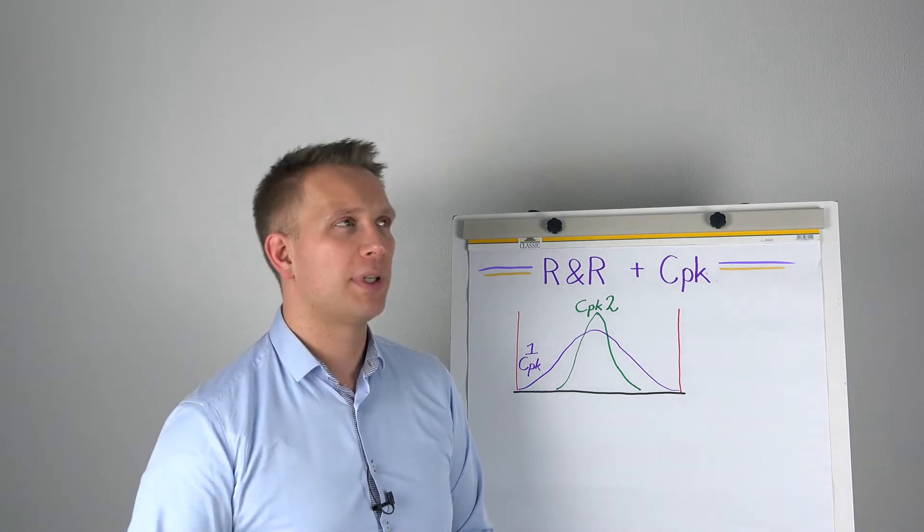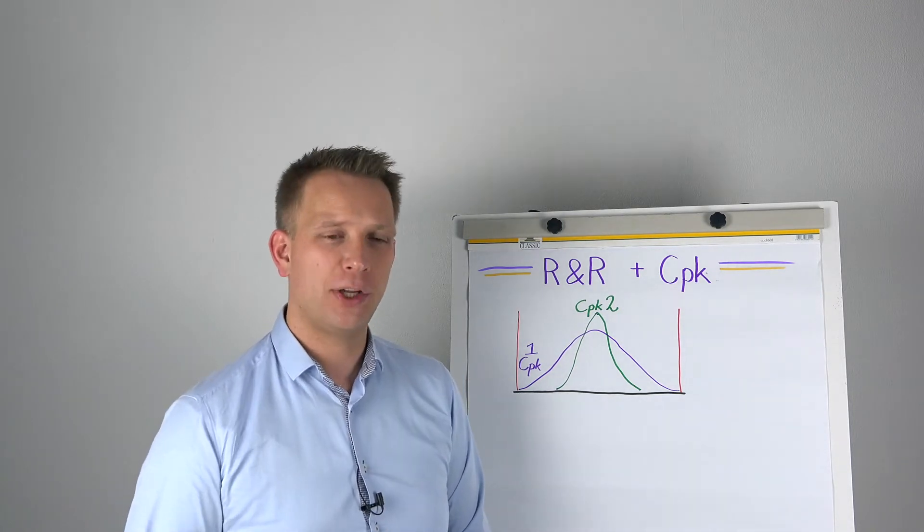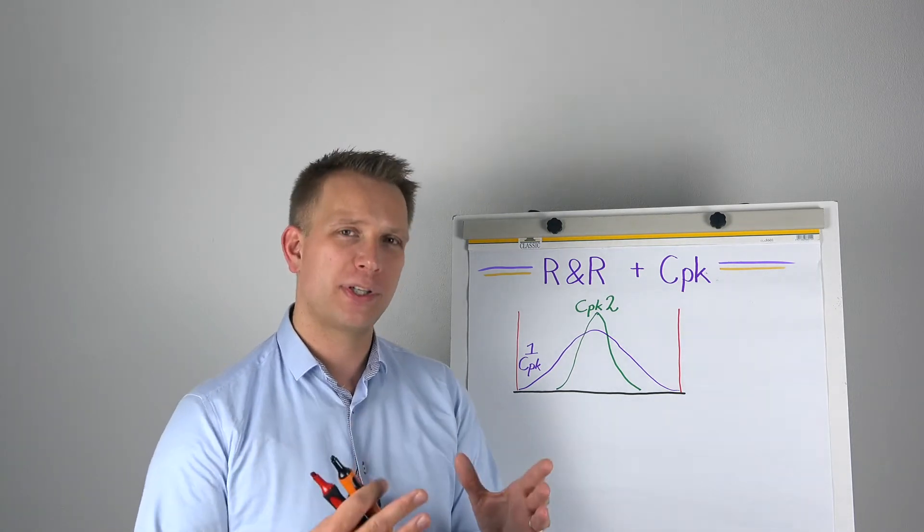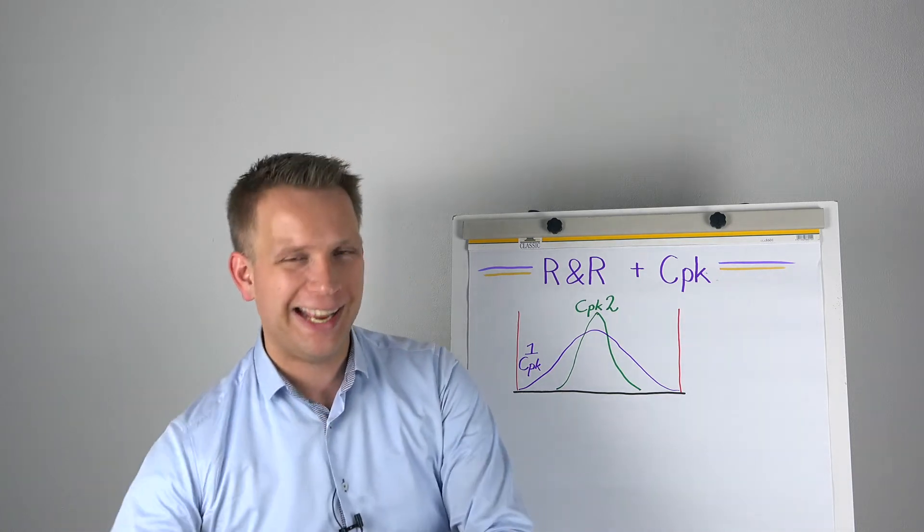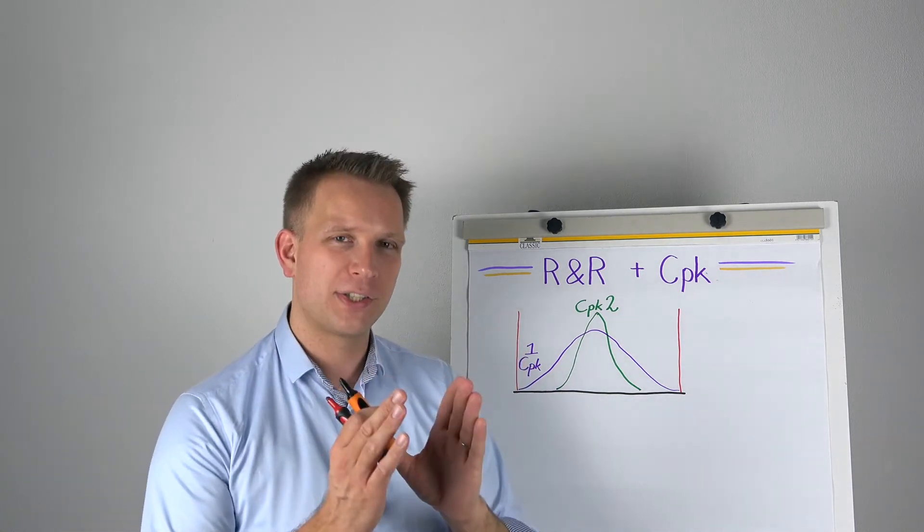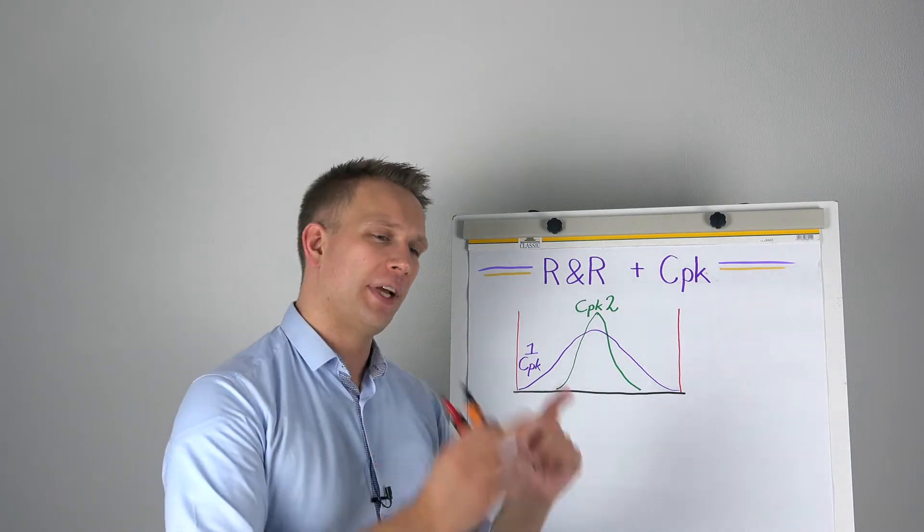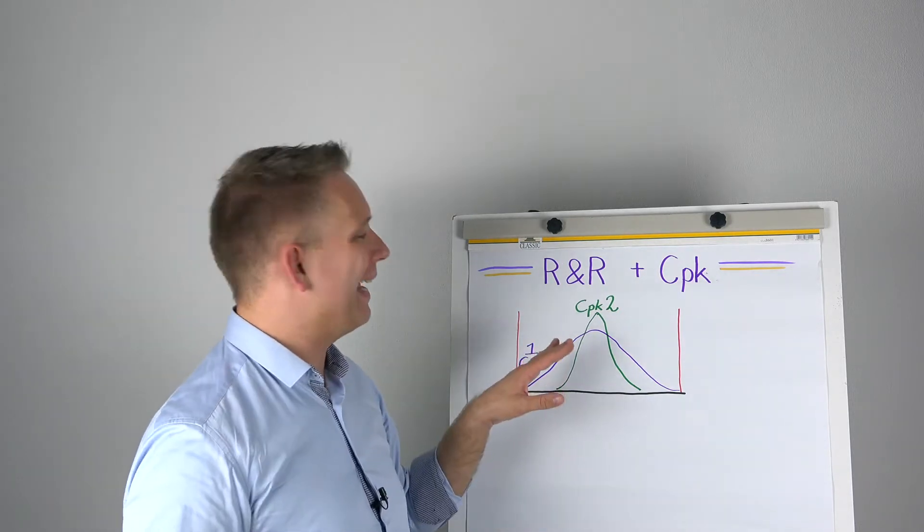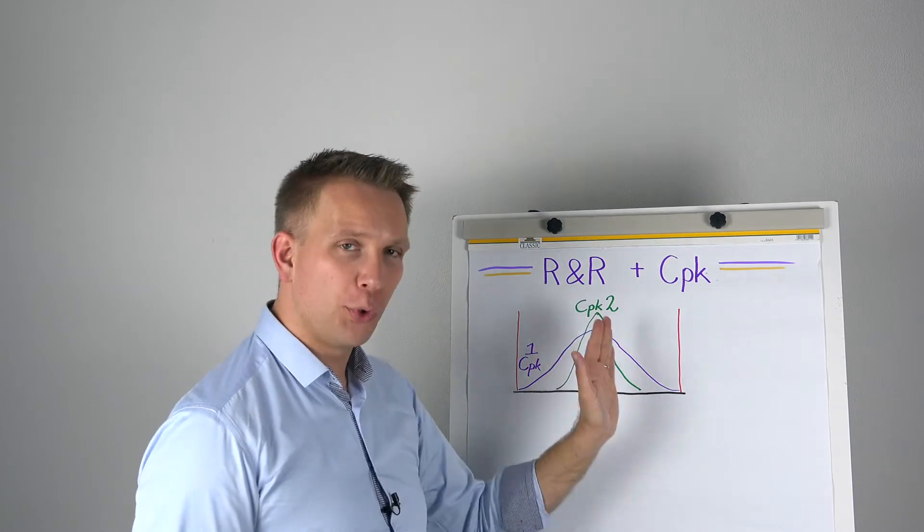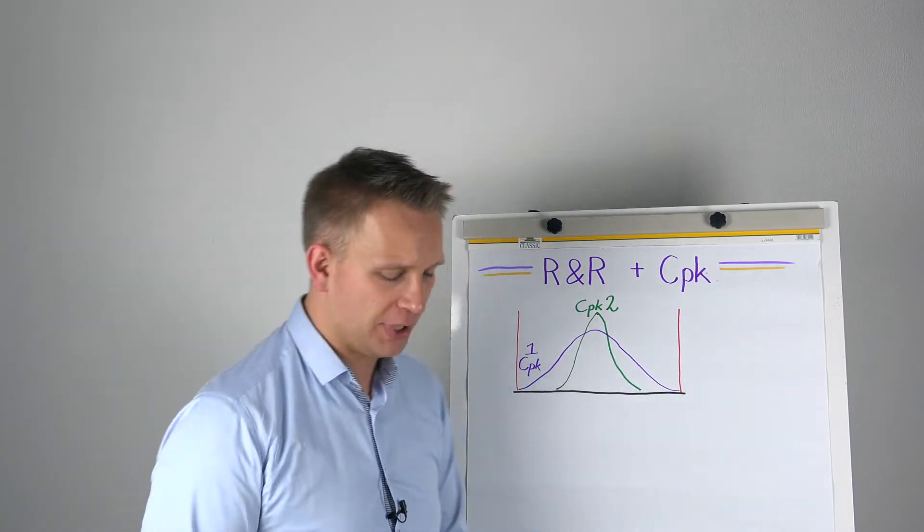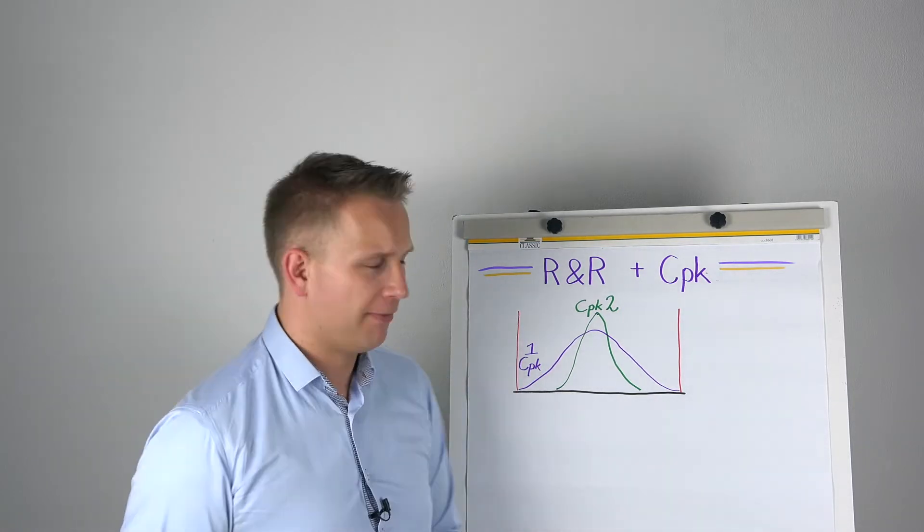So this 1.67 or this 2 CPK is not because you want absolutely all parts within specification. Well, that is the end goal, but it's not because you need that tight tolerance. It is so that you know that the factory supplying these things, they have enough wiggle room so that they can sense a change in the process. But okay, that is the CPK thing.